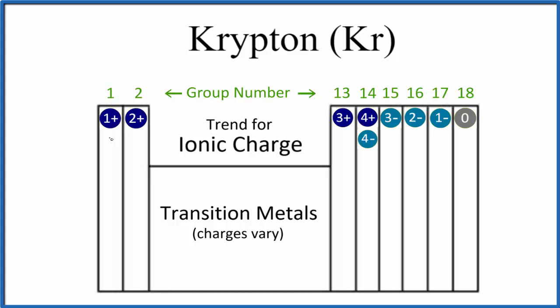Group 1, all of these will be 1 plus when they form ions. Group 2 will be 2 plus. We skip the transition metals, their charges vary.